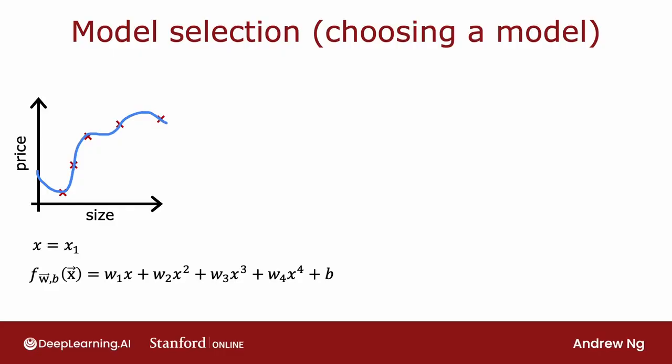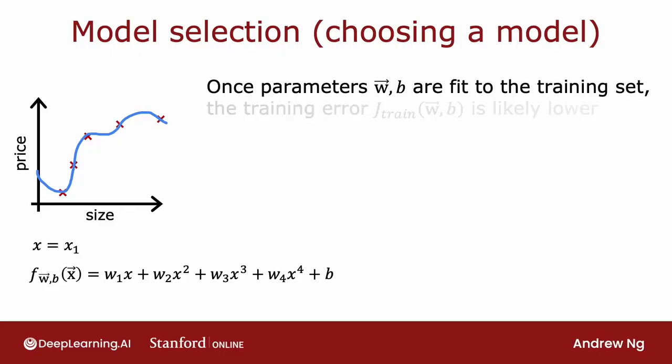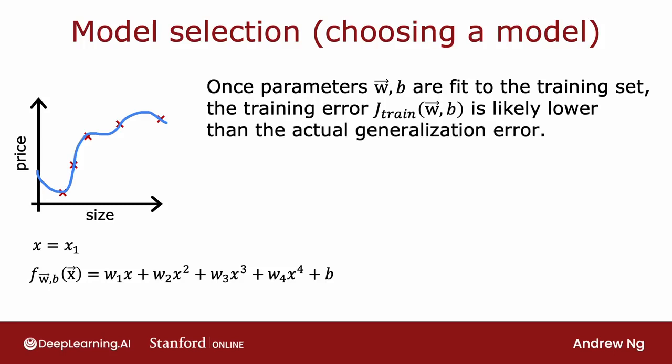One thing we've seen is that once the model's parameters w and b have been fit to the training set, the training error may not be a good indicator of how well the algorithm will do, or how well it will generalize to new examples that were not in the training set. In particular, the training error will be pretty much zero, and that's likely much lower than the actual generalization error.